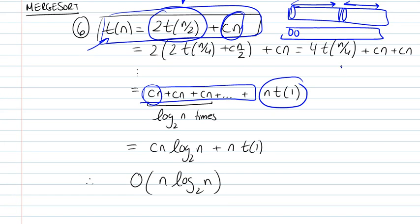How many times could you divide n by 2? Because this will determine when you're going to stop at 1 here. And it's basically log n base 2. So we'll have cn times log n base 2 plus n times some constant element. So our big O of n will be n log n base 2. This is for merge sort.